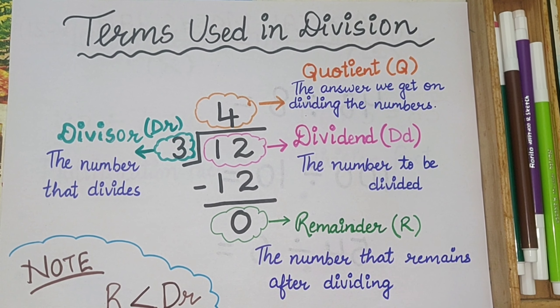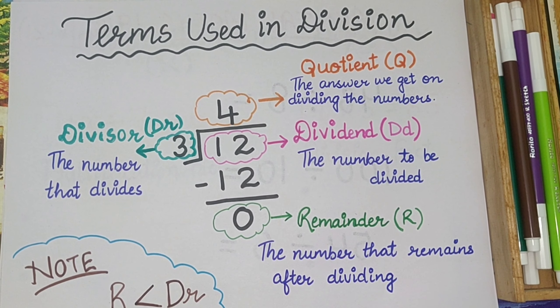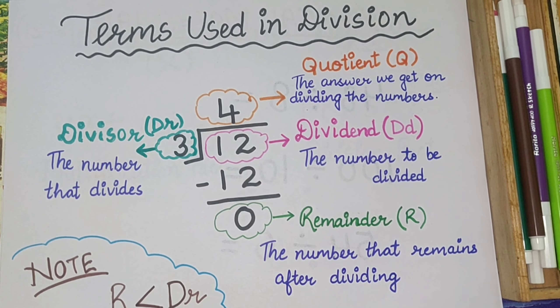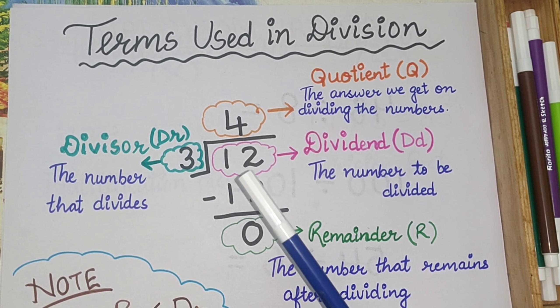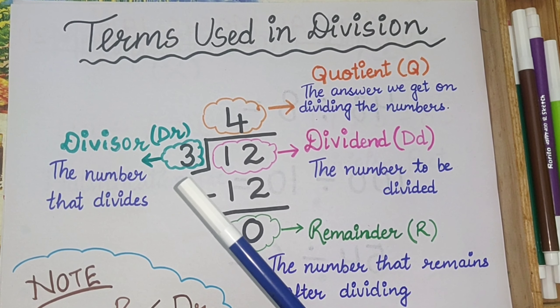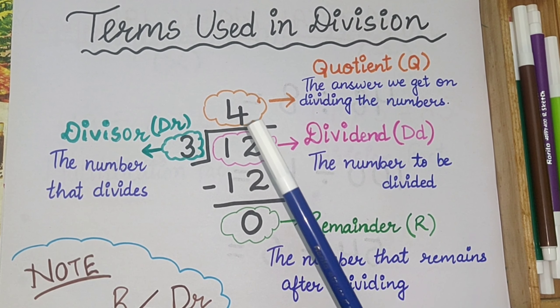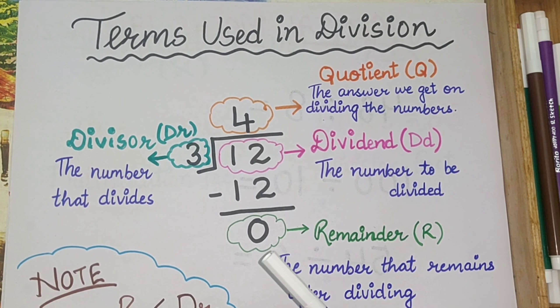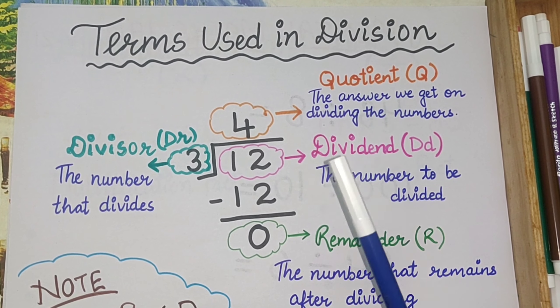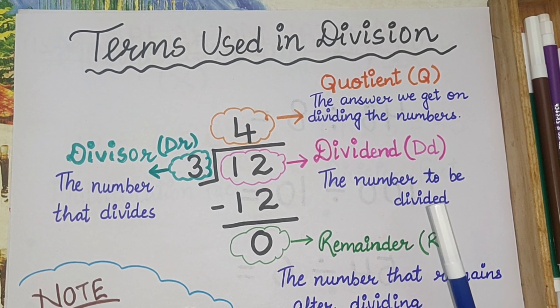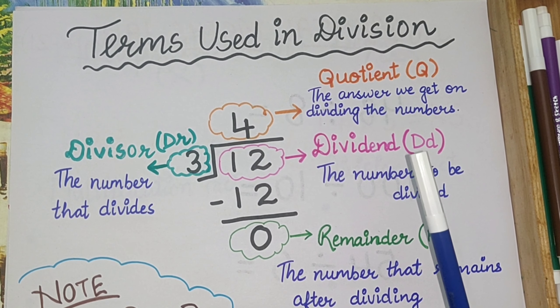Dear kids, you must know the terms that we use in division. Now here we are going to learn the terms that we use in division. I have taken one example for you, like 12 divided by 3. Here the number that divides 12 is 3, and the quotient that we get here is 4, and what is left out here is 0. Now what is dividend? The number to be divided is called the dividend and it is denoted by capital D.